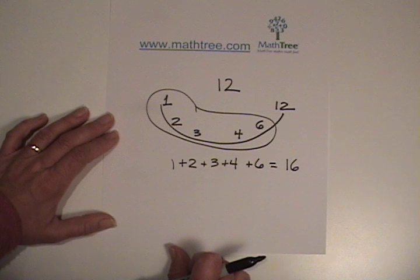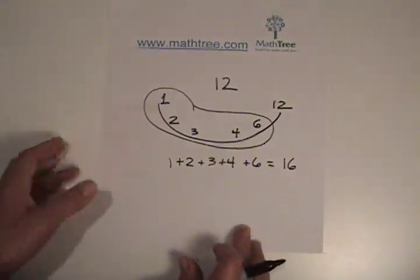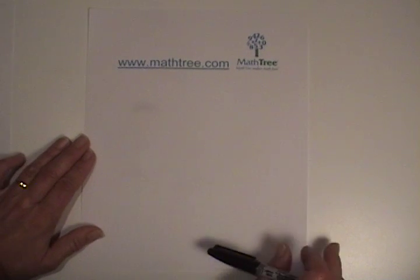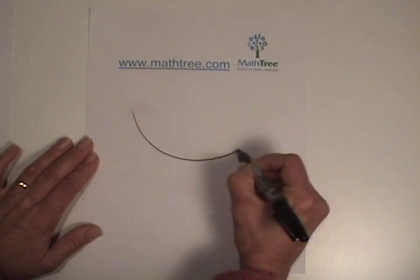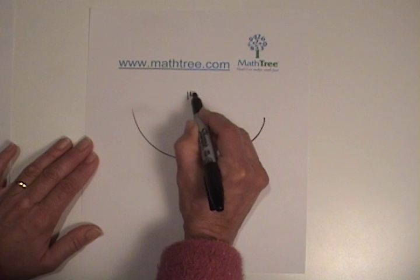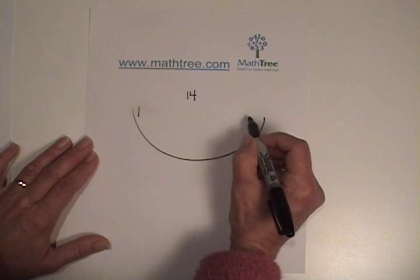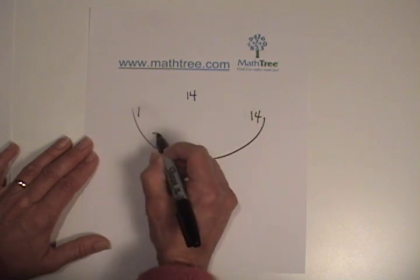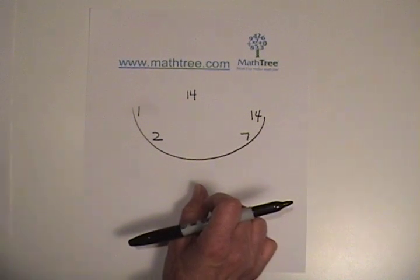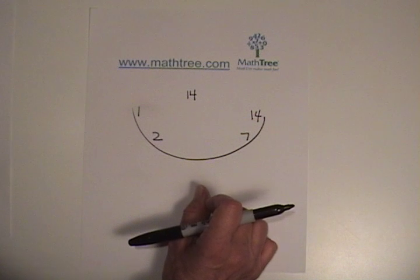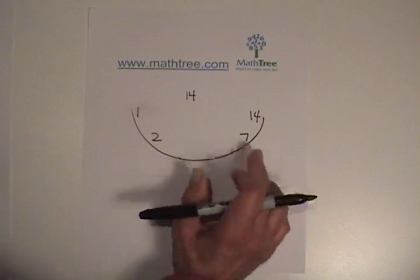Let's try 14. 14, it was 1 times 14, and 2 times 7, 3 doesn't go, 4 doesn't go, 5 doesn't go, 6 doesn't go, and we already have 7, so we know we're done.